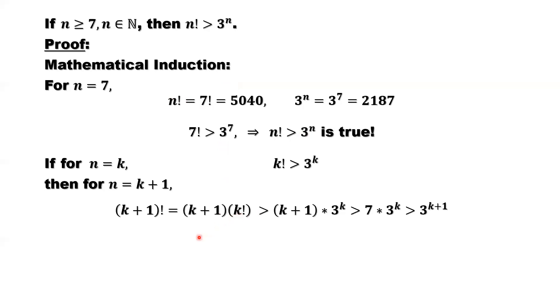Let's check it. k plus 1 factorial equals k plus 1 times k factorial. k factorial, we have the result. We are assuming k factorial is bigger than 3 to the power k.